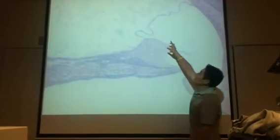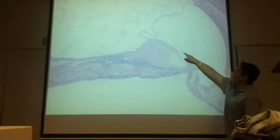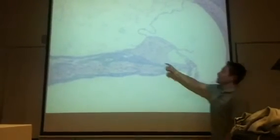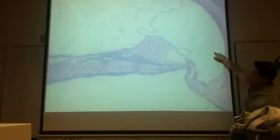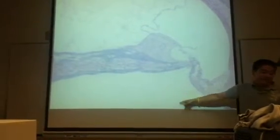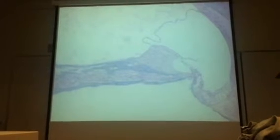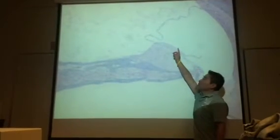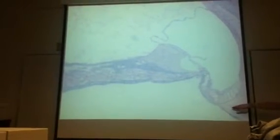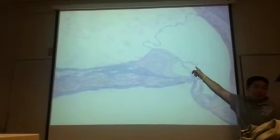This membrane — this thin one right here — is the vestibular membrane. This one down here is the basilar membrane. And this little one with the hook on the end is the tectorial membrane. The vestibular membrane borders the scala vestibuli. They sound similar, but the one at the bottom, or the base, is the basilar membrane, and the short one in the middle is the tectorial membrane.